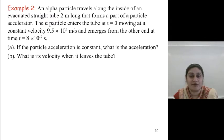...moving at a constant velocity, 9.5 times 10 to the 5 meters per second, and emerges from the other side with time t equals 8 times 10 to the minus 7 seconds. If the particle's acceleration is constant, what is its acceleration? And number 2, what is the velocity when it leaves the tube?